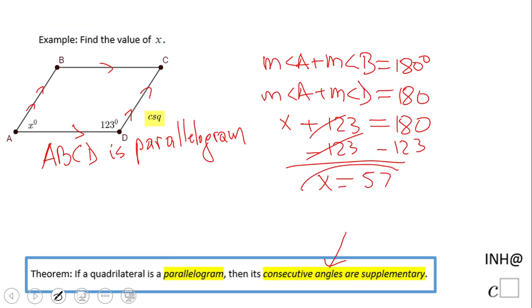That's it! The measure of angle A is 57°. If you enjoyed this, don't forget to click the like button and come back to iNeedHelpAtC² for more help. Thank you!